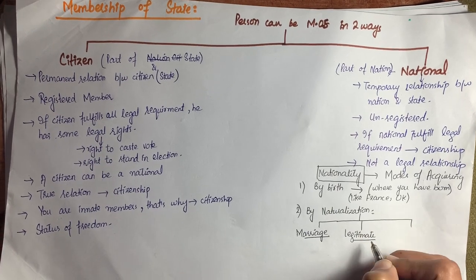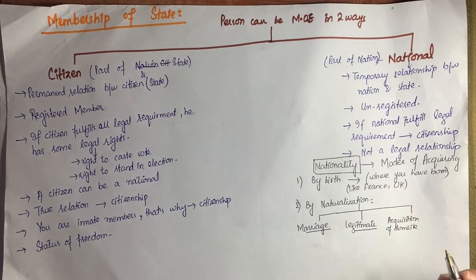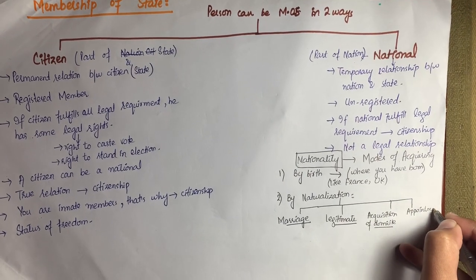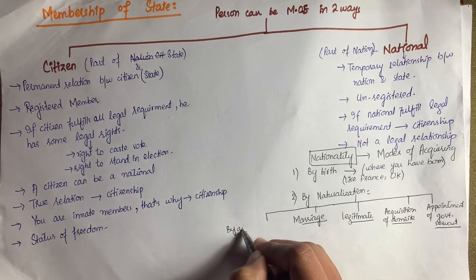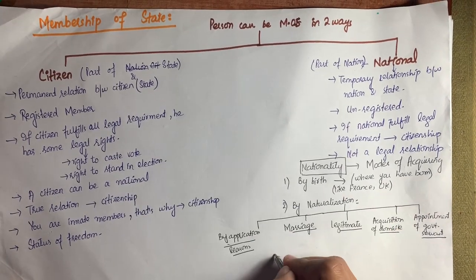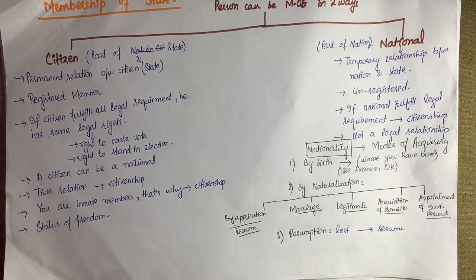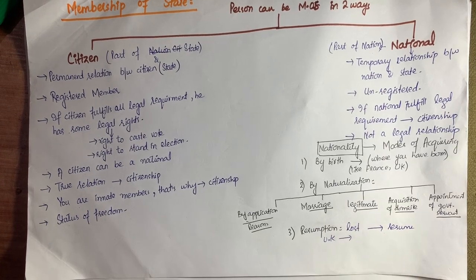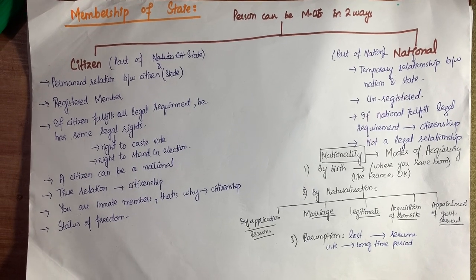By naturalization: a person becomes the national of a state if they get married to a person living in that state, or if they are a legitimate child of their father from that state, they get the nationality of that state. Also by acquisition of domicile. By appointment as a government servant — if you are appointed as a government servant in that state, you get the nationality of that state. Another way of naturalization is by application — if you submit an application to the government with stated reasons, you can get the nationality of that state.